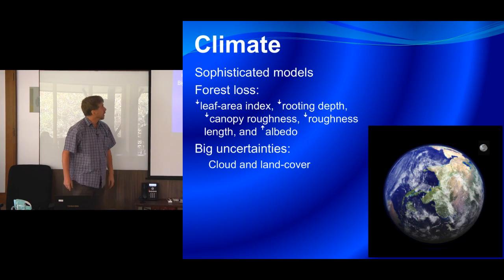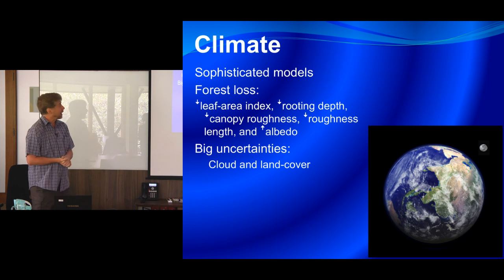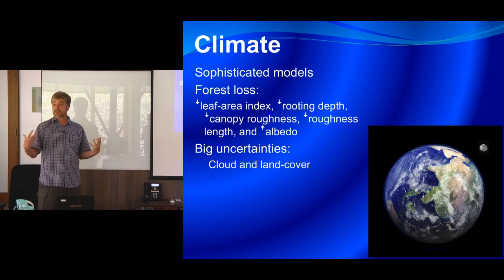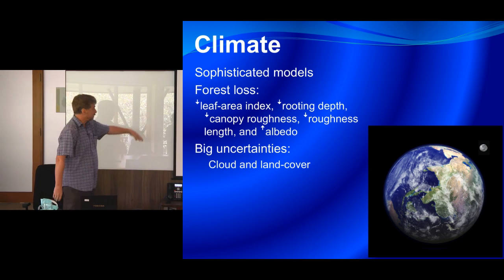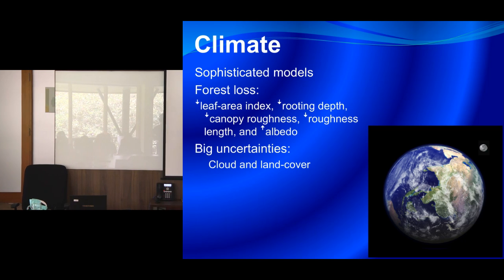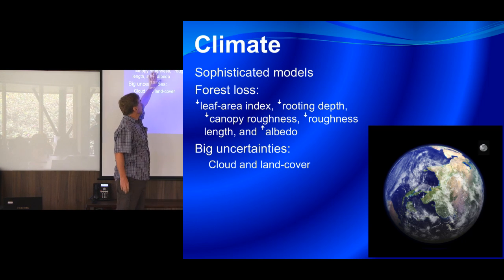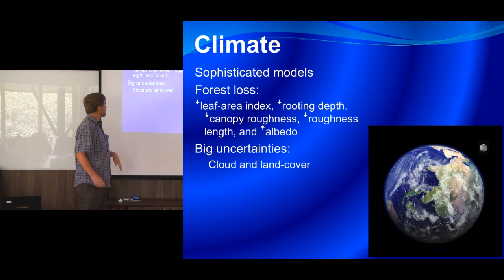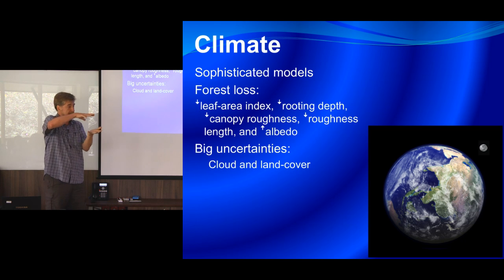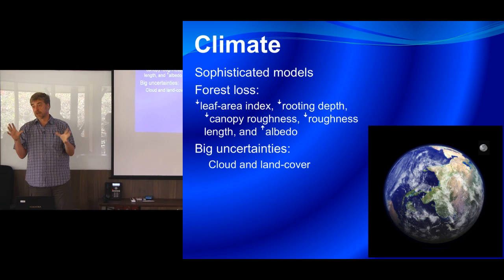What do climate models tell us about forests and rainfall? We have really sophisticated models and can talk about forest loss in global climate models — the kinds the IPCC uses. They represent things like declining leaf area index, declining rooting depth, and changes in canopy roughness. But there are really big uncertainties. If you look at IPCC reports, a lot of the documentation is about uncertainties — because they're really big. It's really hard to do an experiment on the Earth.